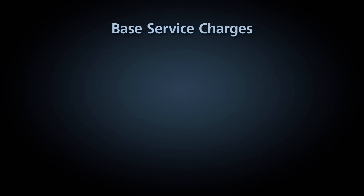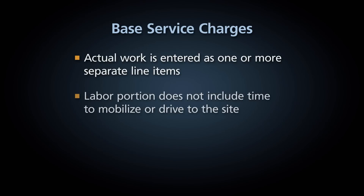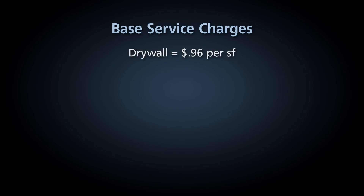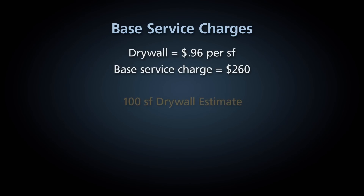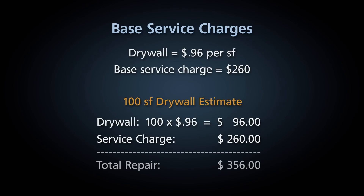When using base service charges, the actual repair work is entered as one or more separate line items. The labor portion of each line item does not include time needed to mobilize or drive to the site; those costs are listed separately within the base service charge. Let's say a contractor charges 96 cents a square foot to replace drywall and has a separate service charge for drywall repair of $260. If the contractor estimates a small job with 100 square feet of drywall, the estimate will include a line to replace 100 square feet at 96 cents per square foot for a total of $96. This estimate will also include the $260 base service charge for mobilization, travel and so forth. So the total estimated charge for this 100 square foot drywall repair will be $356.